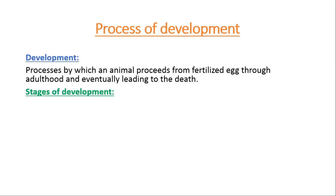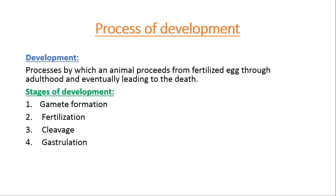The stages of development include gamete formation, the formation of male and female cells, fertilization, cleavage, gastrulation, organogenesis, and growth. Let's see what each of these steps or stages involves.